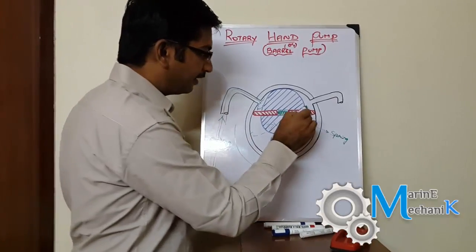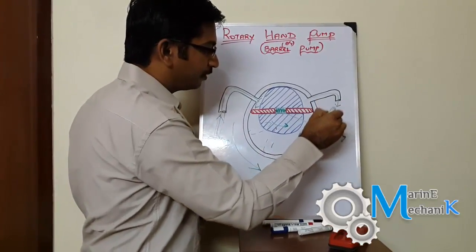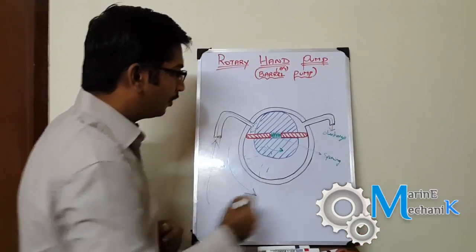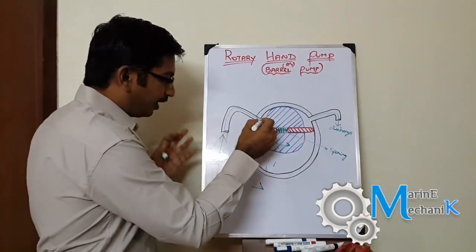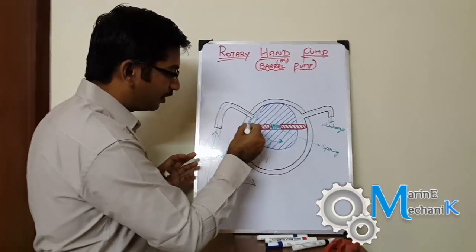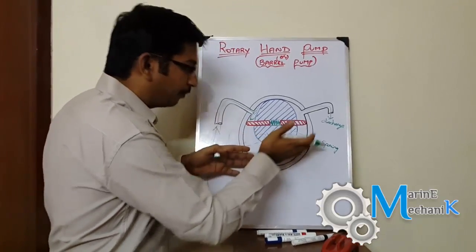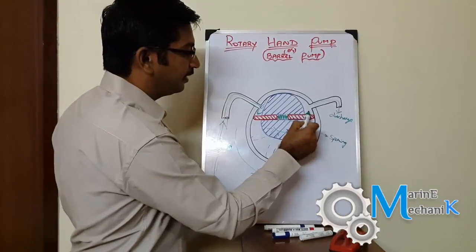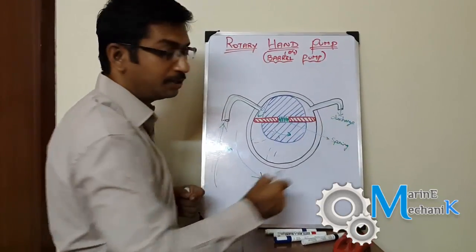Then it goes to this channel, which is the discharge. The end traps liquid between this space, and as it rotates, it travels through the pump chamber. Then as the vane is getting compressed on the other end, it goes out to the discharge port.